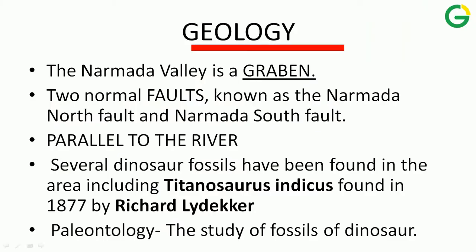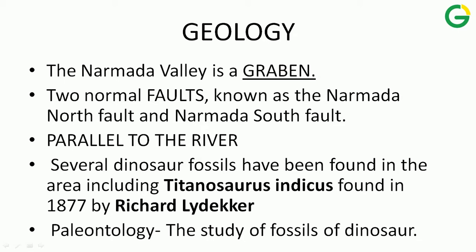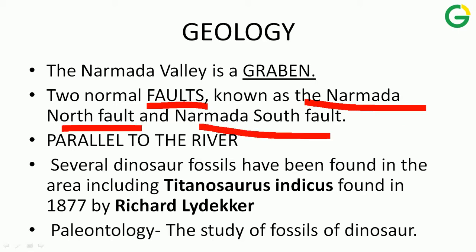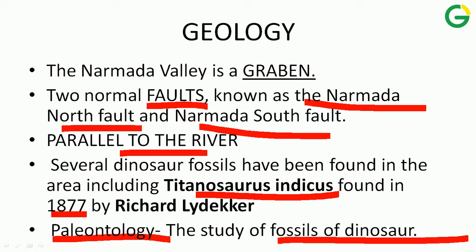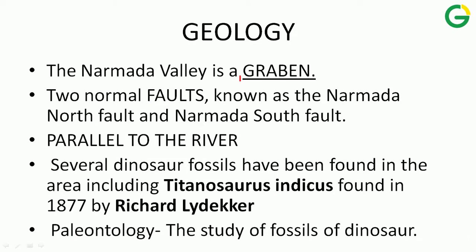The geology: the Narmada valley is a graben. Two normal faults — known as the Narmada North Fault and Narmada South Fault — run parallel to the river. Several dinosaur fossils have been found in the area, including the Titanosaurus indicus, which was discovered in 1877. The study of dinosaur fossils is known as paleontology.